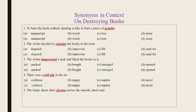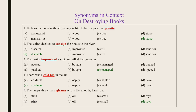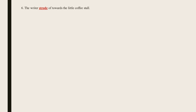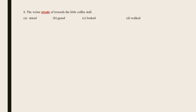Statement 5: The lamps threw their gleams across the smooth hard road. The underlined word is gleams — the right answer is Rays. Statement 6: The writer strode off towards the little coffee stall. The underlined word is strode — the right answer is Walked.